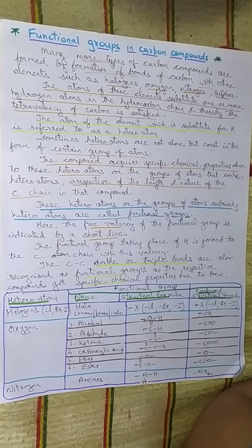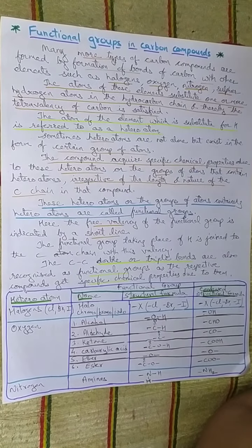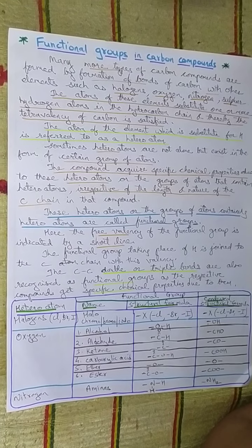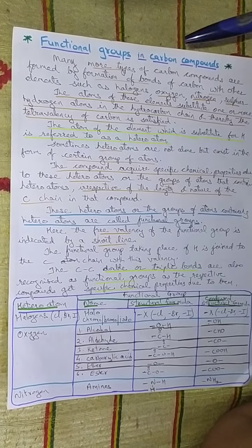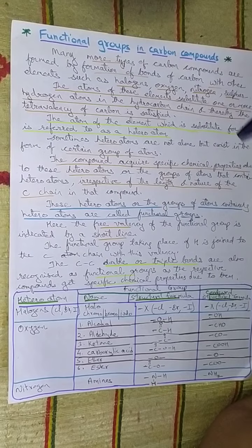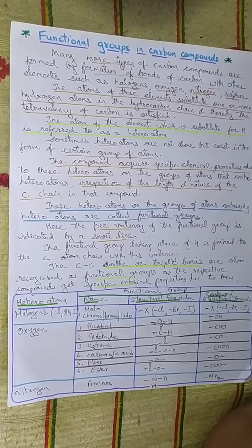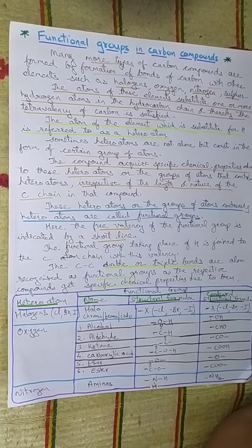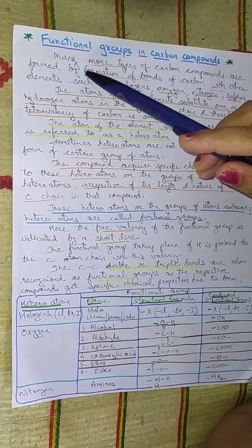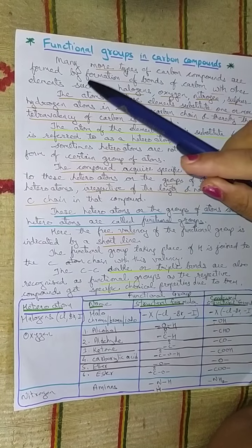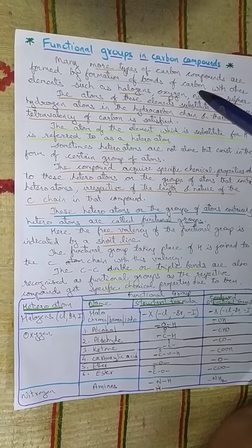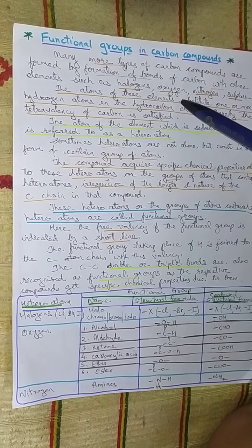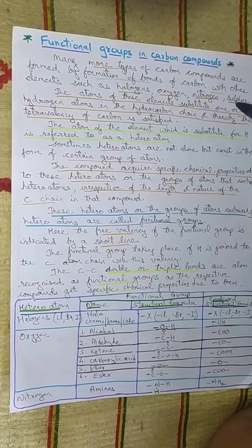Hello dear students, now let us study the next point — the functional group in carbon compounds. Before this we have studied the hydrocarbons, the catenation property, and the tetravalent property of carbon, because of which there are a maximum number of carbon compounds found in the world. Many more types of carbon compounds are formed by the formation of bonds of carbon with other elements such as halogens, oxygen, nitrogen, sulfur, and many more.